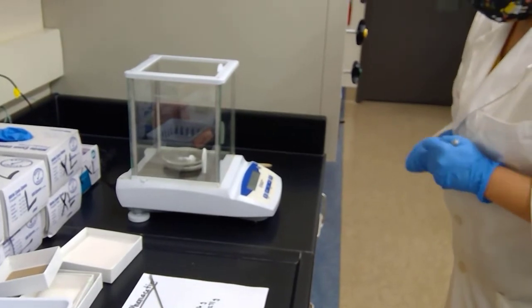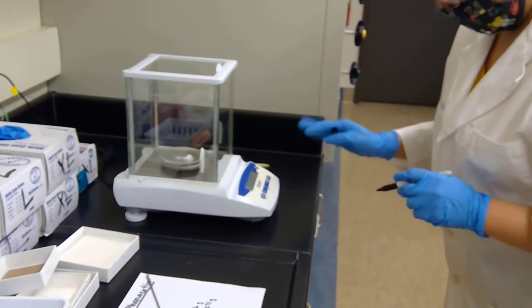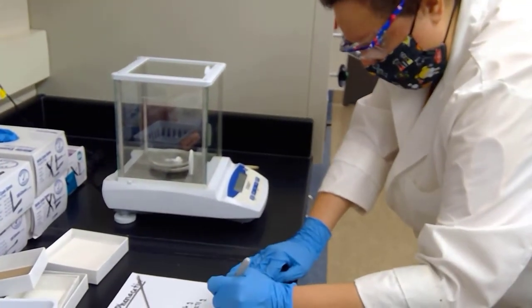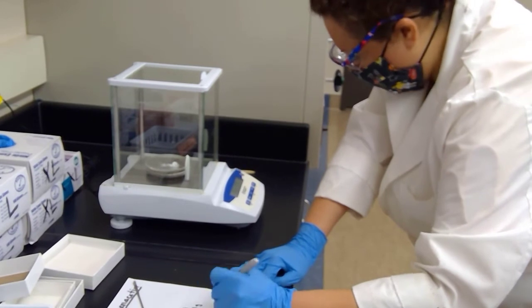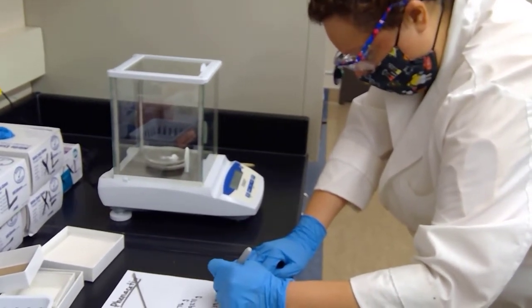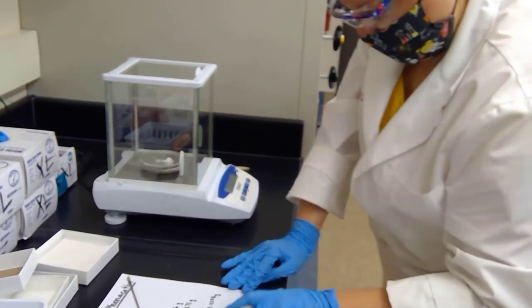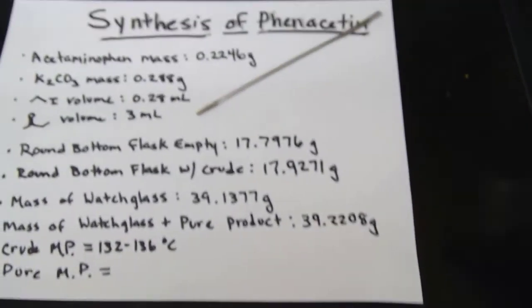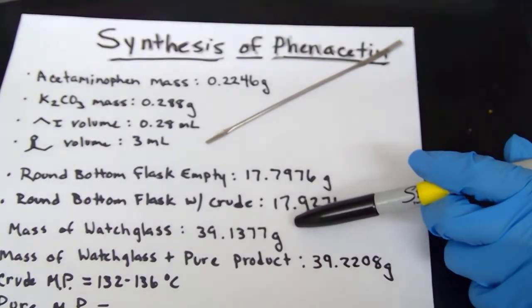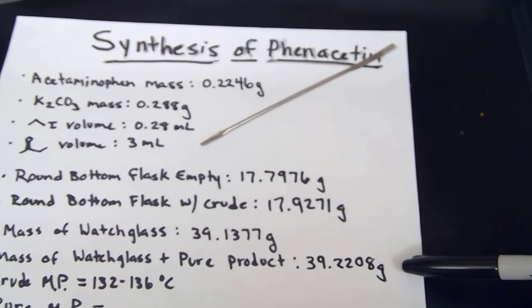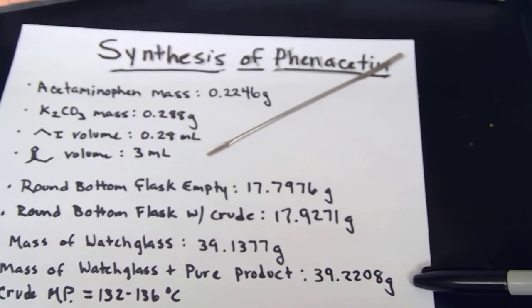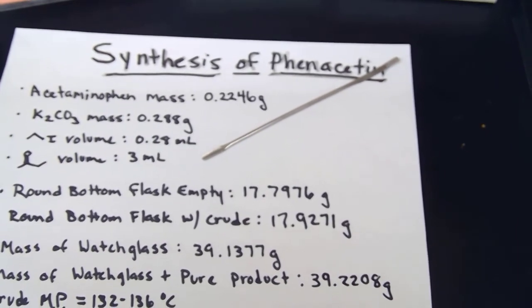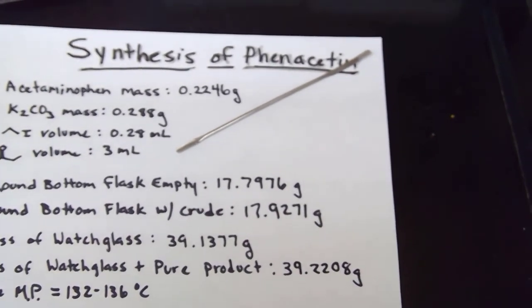Oh, this is wonderful. We do have about 0.9 grams of product. Our mass here is 39.2208 grams. I'll zoom in here so that you can check the mass of the watch glass prior to any solid. This is just the watch glass by itself, and here we have the watch glass plus our purified product. Our next job will be to take the melting point of our pure product and perform a ferric chloride test.